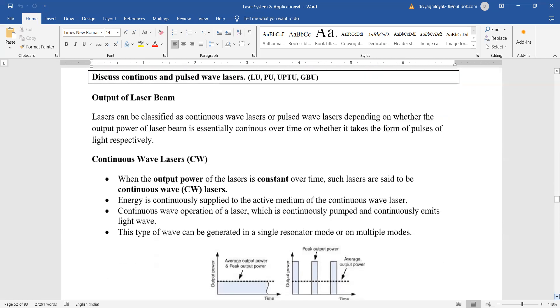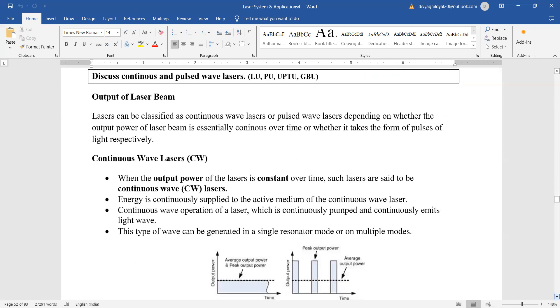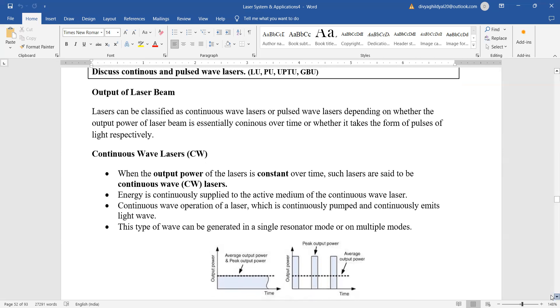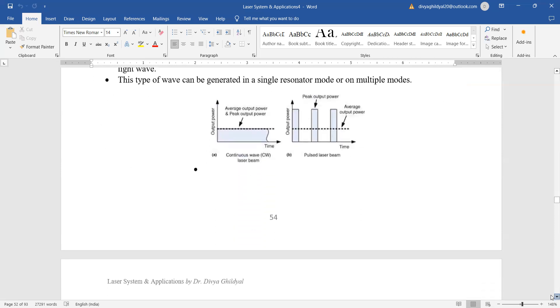Discuss continuous and pulsed wave lasers. Continuous lasers are those which give an output in continuous form, like helium-neon laser. Their output comes out in a very continuous form. Here you can look at the diagram also.